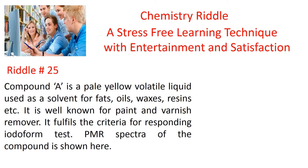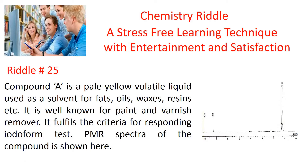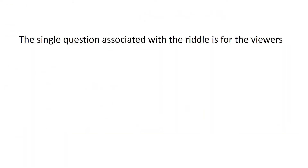Compound A is a pale yellow volatile liquid used as a solvent for fats, oils, waxes, resins, etc. It is well known for paint and varnish removal. It fulfills the criteria for responding iodoform test. The PMR spectra of the compound is shown here. The only question associated with the riddle is: What is compound A? You have to identify compound A. Mail your answer to malakemfilik at gmail.com.